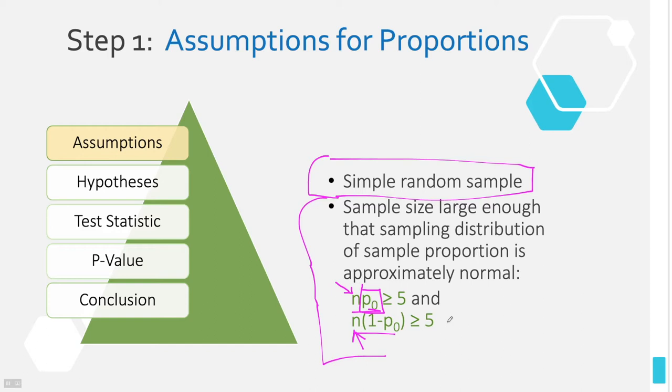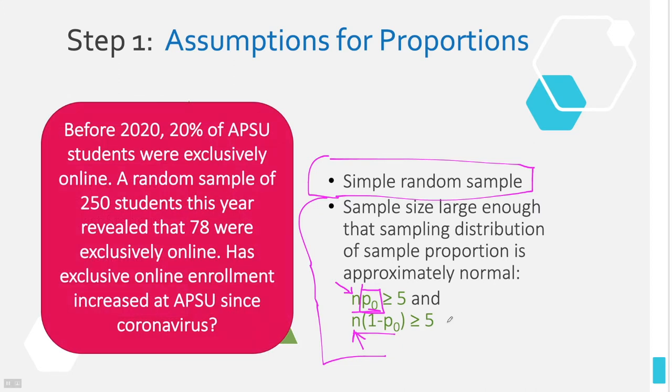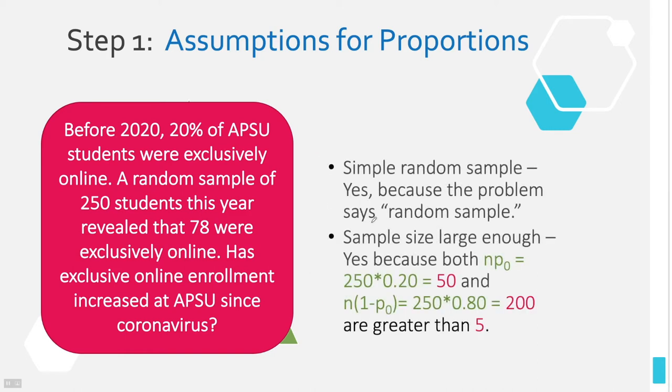Remember, P0 will be our hypothesized proportion. So whatever proportion we're going to use in our hypotheses, that's the number that goes here. And then this is our sample size. So we're going to multiply our sample size by our hypothesized proportion, and then we're going to find the complement of our hypothesized proportion, and we'll multiply it by n as well. Both of these numbers need to be at least five. Other textbooks will give you numbers that are much higher than five. The previous textbook we used said 15 and 15. So five is pretty low, but that's what this textbook says. So pause the video now and give me the assumptions and why or why not these assumptions are met in this scenario.